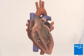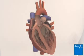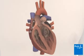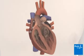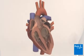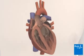In heart block, the electrical impulses that control your heartbeat are slowed down or blocked as they travel through your heart. This can result in a slow heart rate.